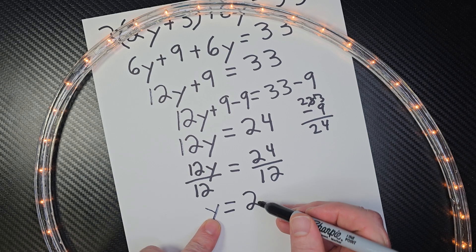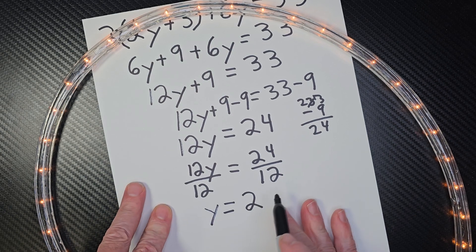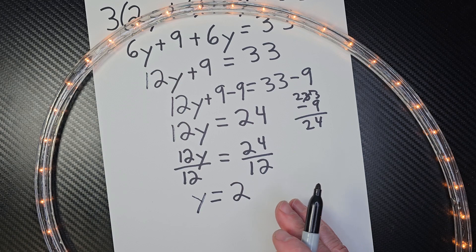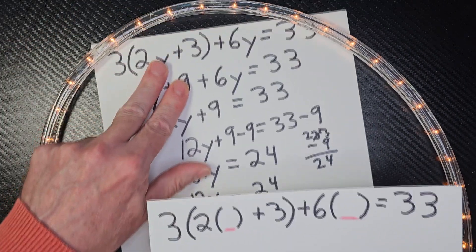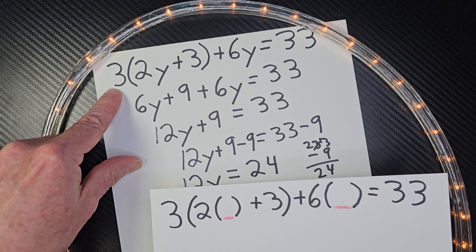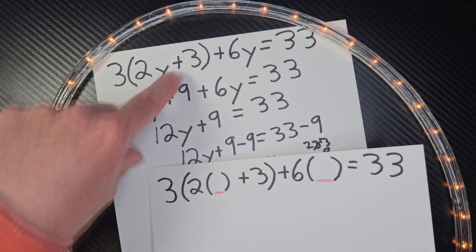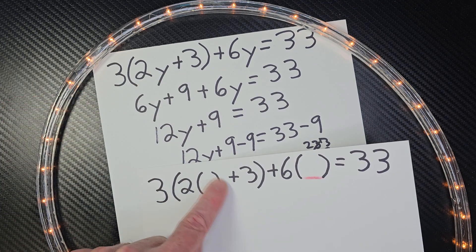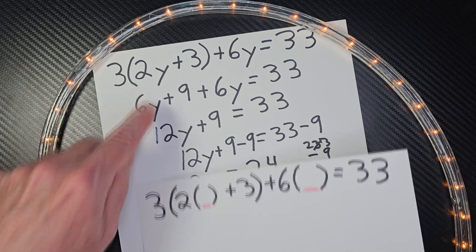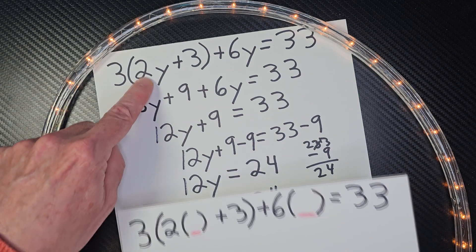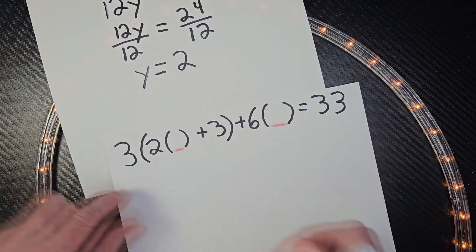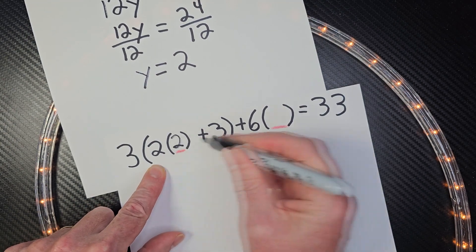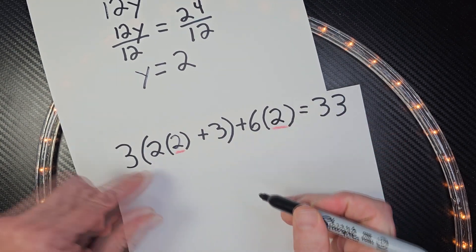So this looks like it's the answer. I'm pretty sure that's the answer, but let's prove it. So I'm going to take our original problem, which was right here. This was 3 times 2Y plus 3. So what I did is I put parentheses right here, and we're going to substitute the 2 right here and put it in the place value of Y. So I'm going to go ahead and put this paper right there. I'm going to go ahead and write 2 here and then 2 here.